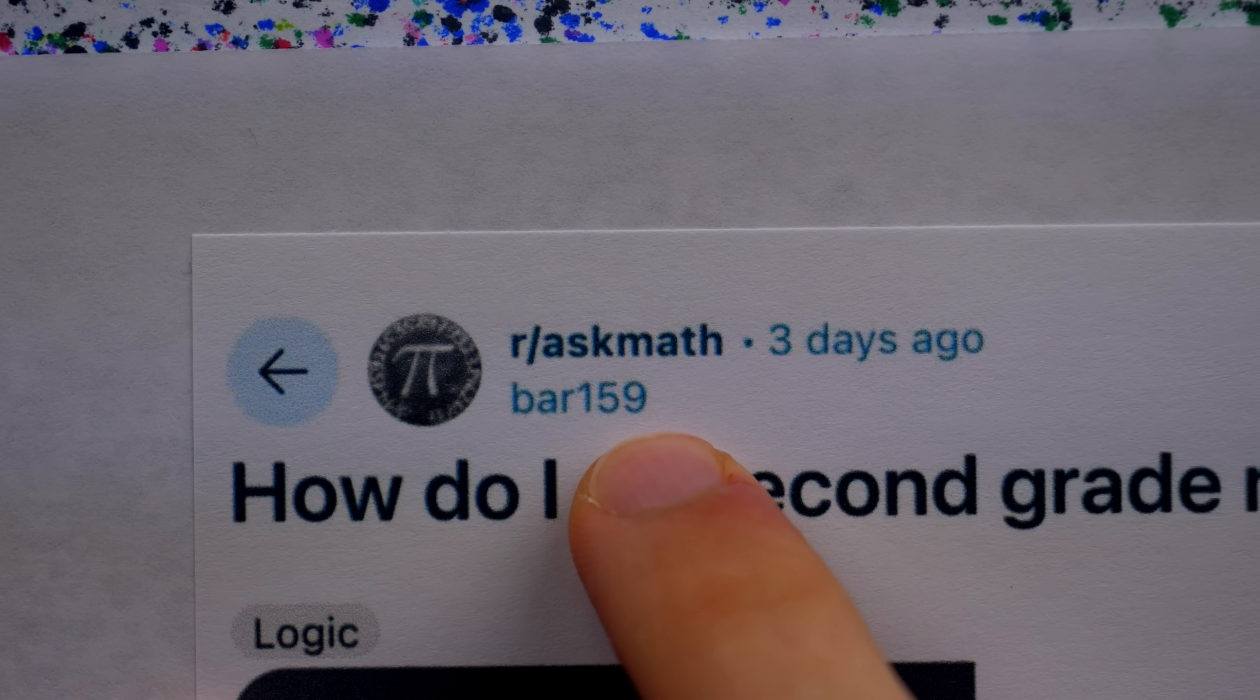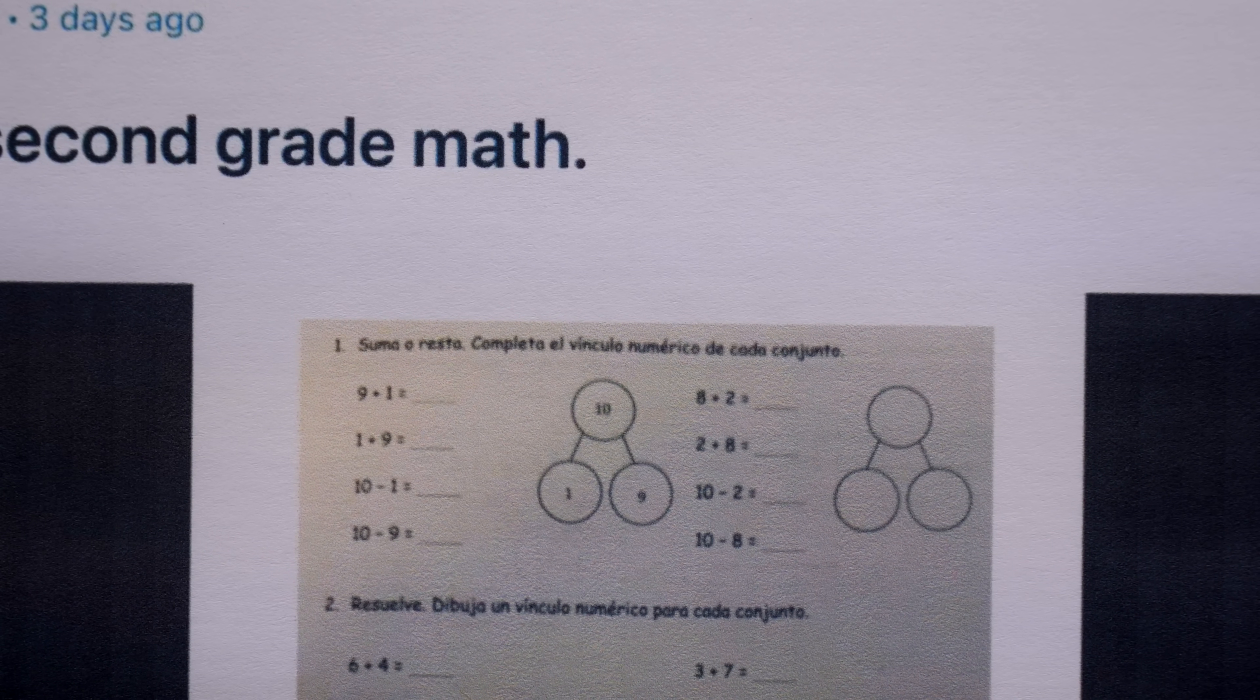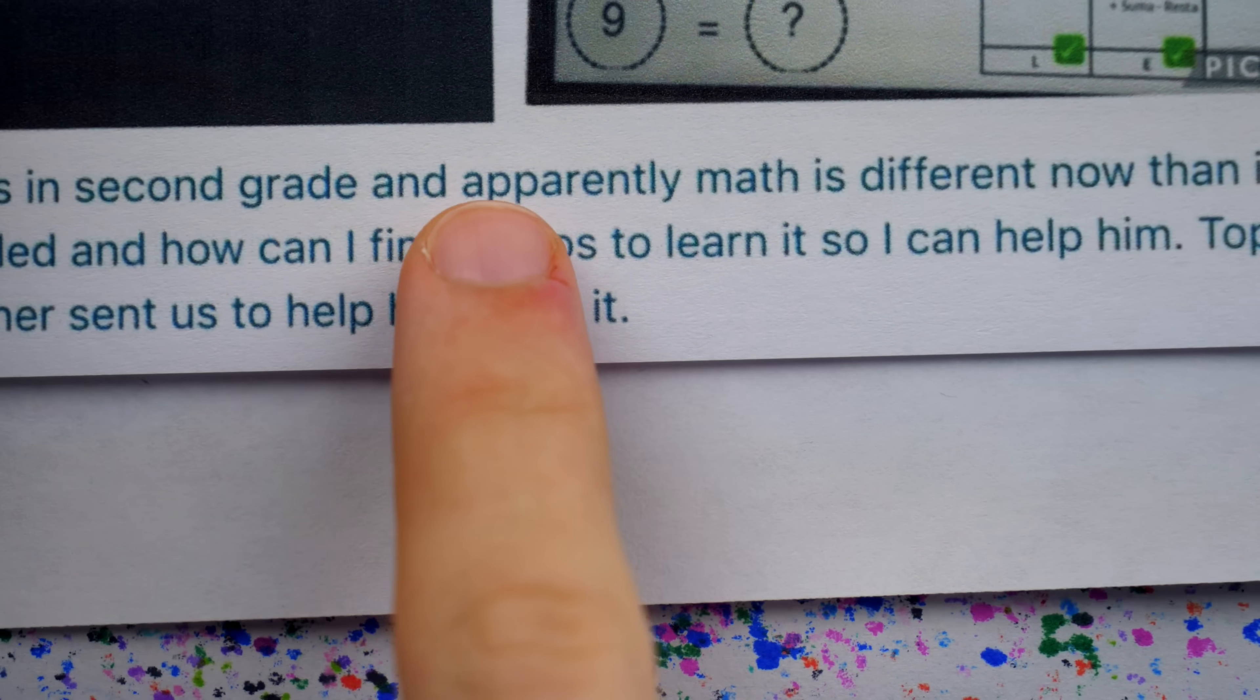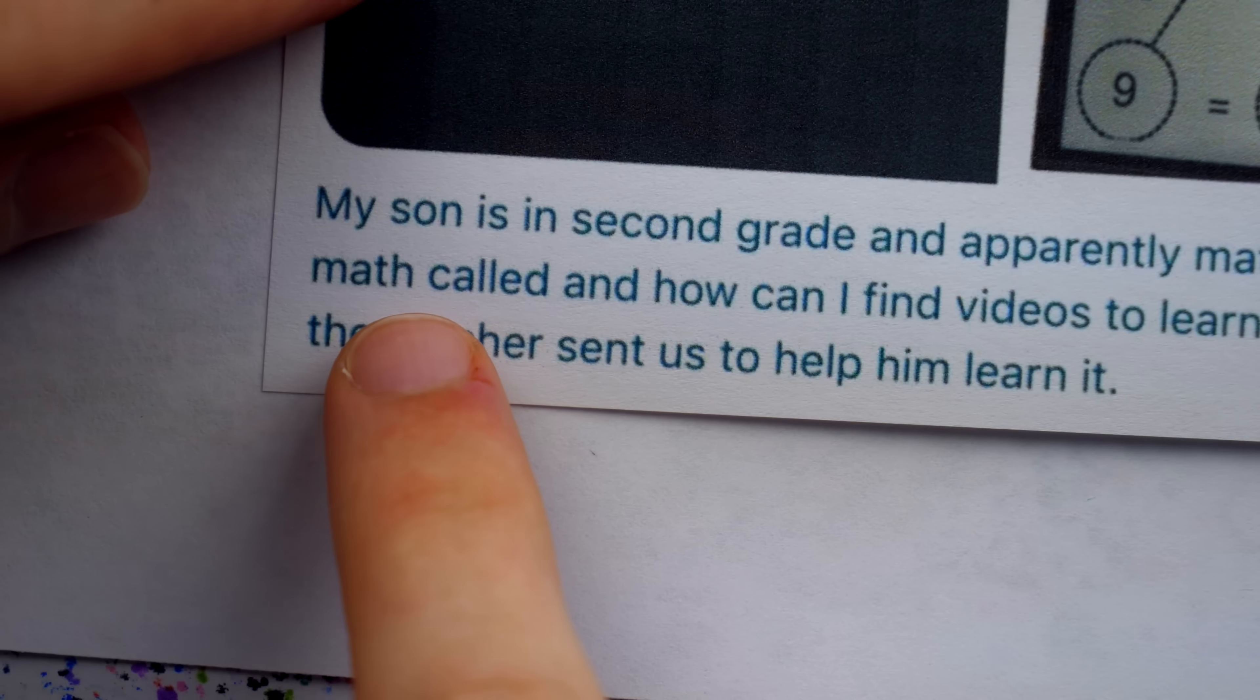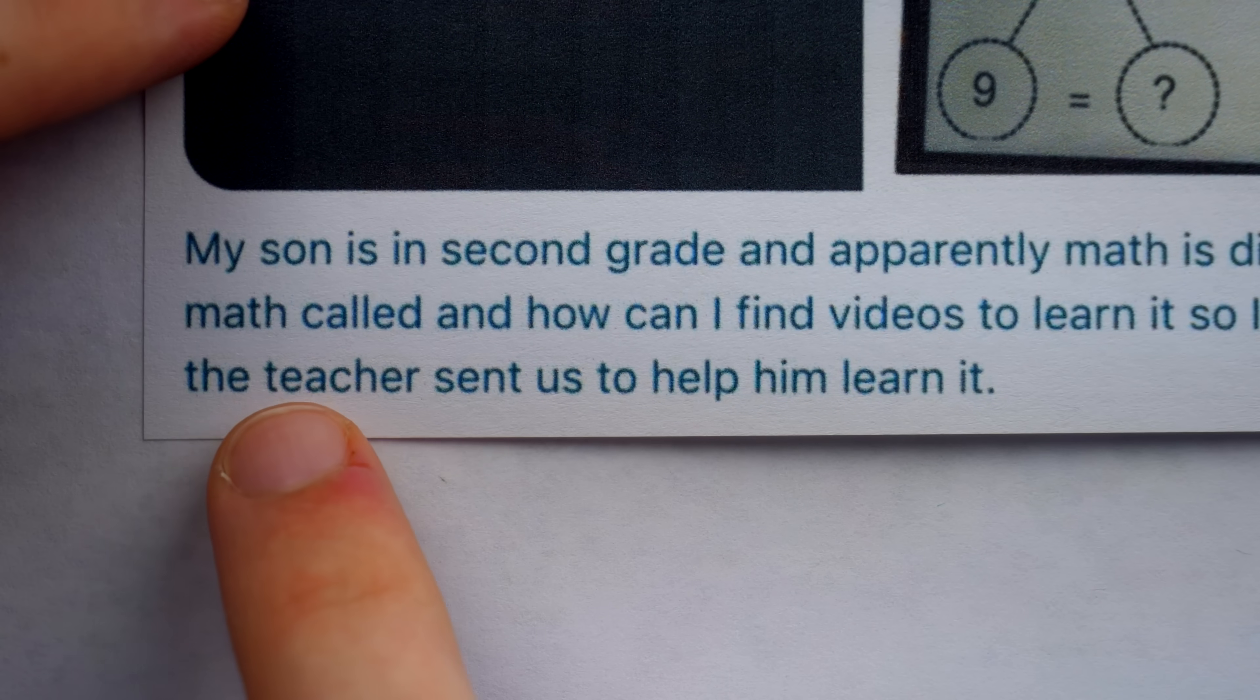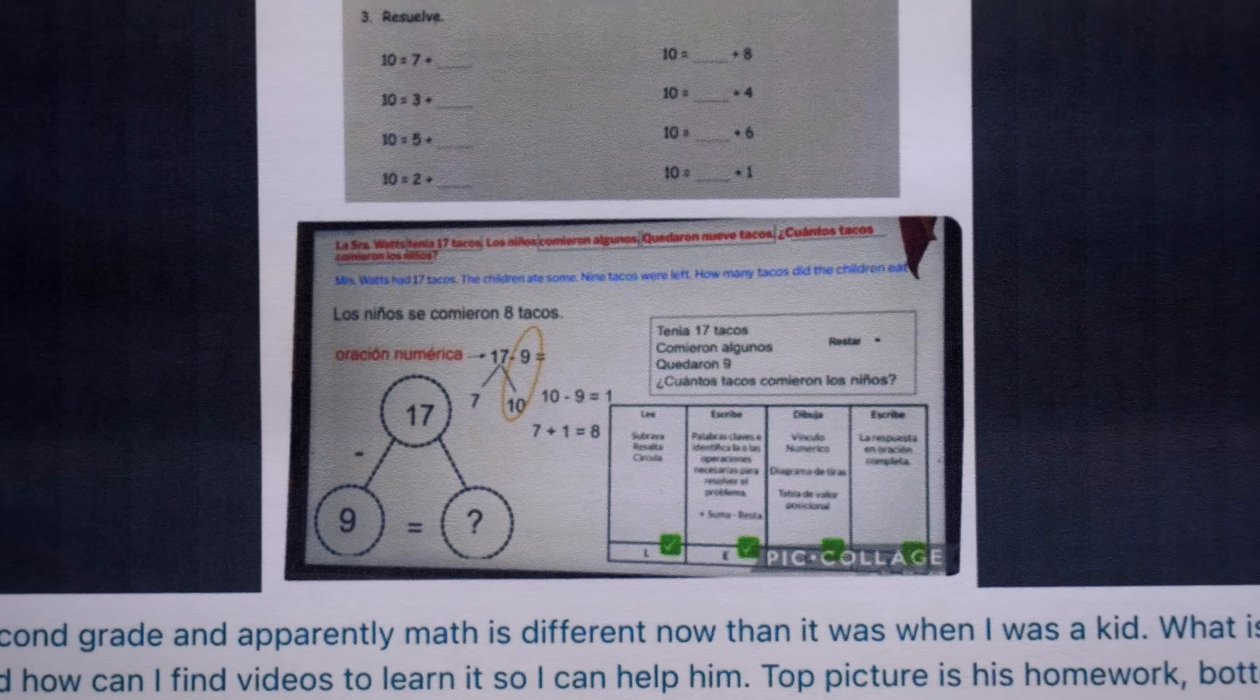159 is a sum of three consecutive primes. Asks on r slash ask math, how do I do second grade math? And here we see a worksheet with some diagrams on it and a bunch of arithmetic problems. And then we have this picture attached. He says my son is in second grade and apparently math is different now than it was when I was a kid. What is this type of math called? And how can I find videos to learn it so I can help him? Top picture is his homework, bottom is what the teacher sent us to help him learn it.